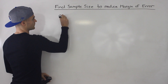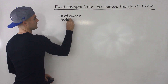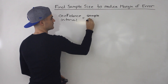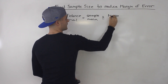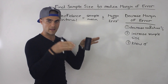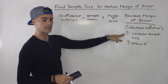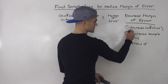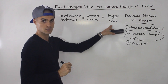To do a quick review, we know that a confidence interval in general is equal to the sample mean plus or minus the margin of error. And if we want to decrease that margin of error or make that confidence interval more narrow, we can do three things: decrease the confidence percentage, increase the sample size, or know the population standard deviation. What we're going to be focusing on in this video is increasing the sample size in order to get a certain margin of error.